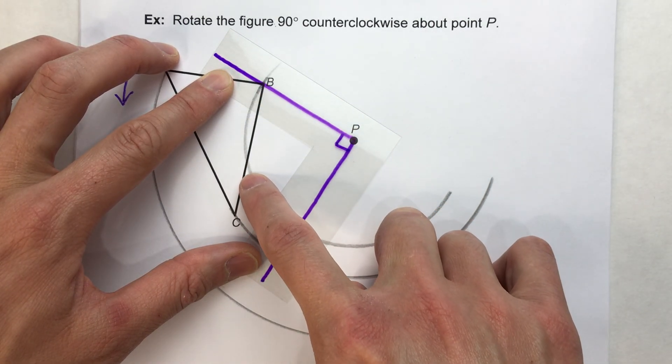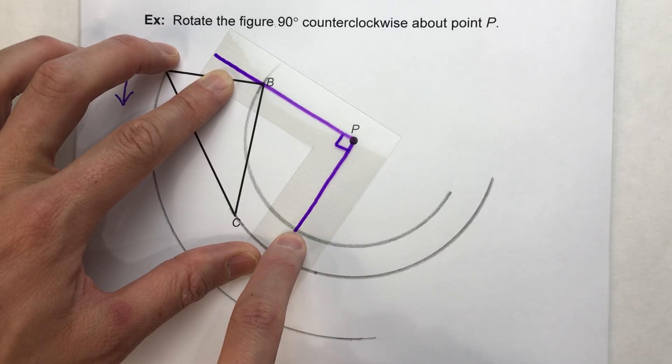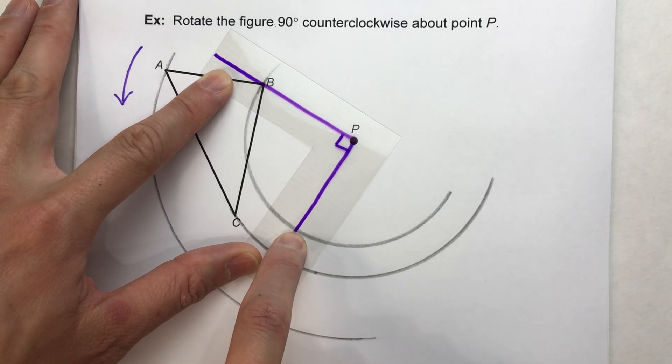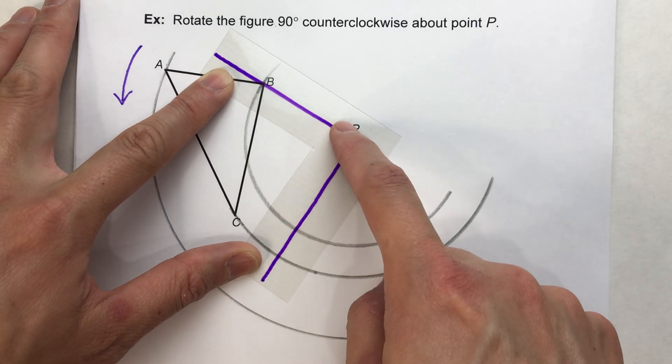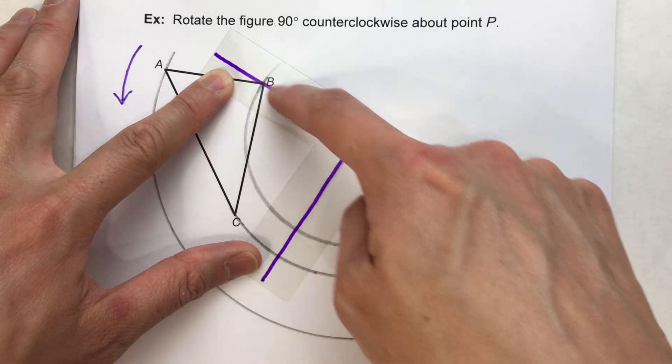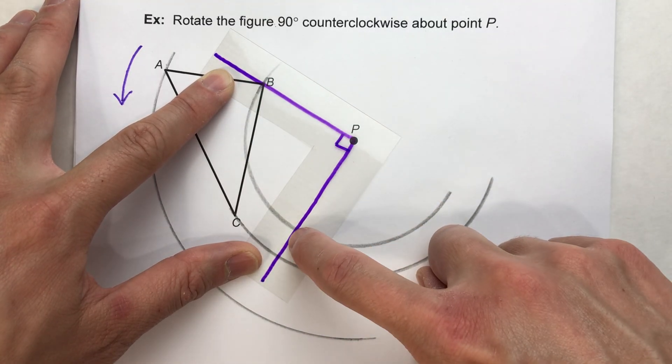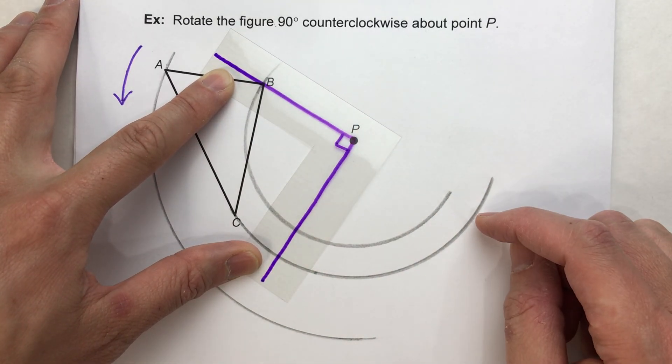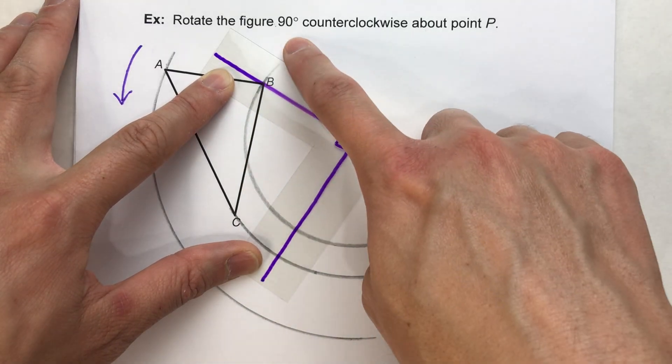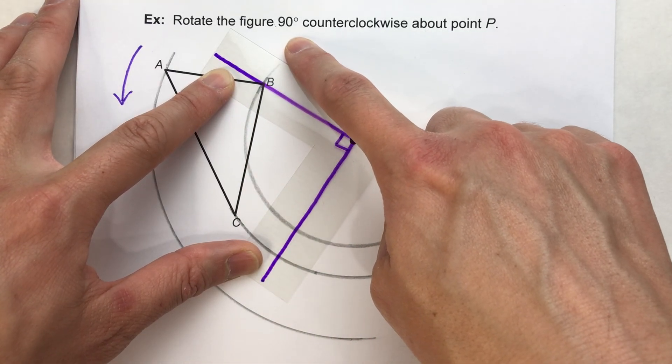When B follows this path, it'll stop right here. And that's how we know it'll be 90 degrees because this angle from P to B and from P to where B prime is going to end up, when that angle is 90 degrees, that's when we've rotated 90 degrees counterclockwise.